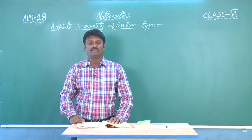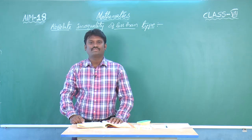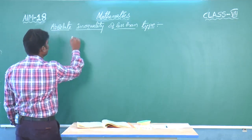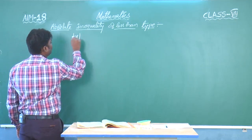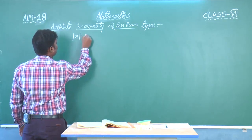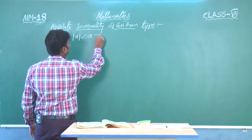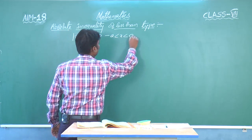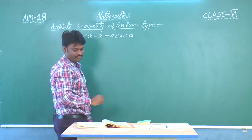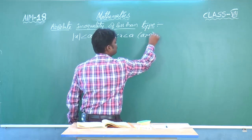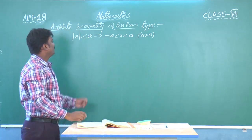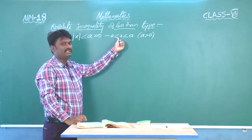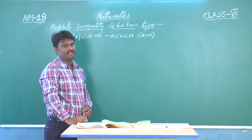Children, we are going to learn more today about absolute inequality of less than type. The rule is: modulus of x less than a implies minus a less than x less than a, where a greater than 0.